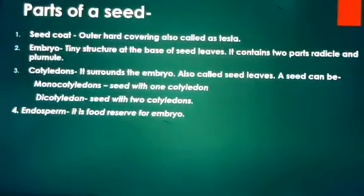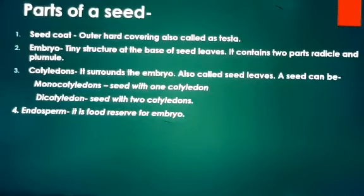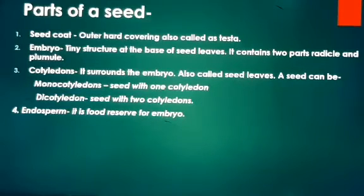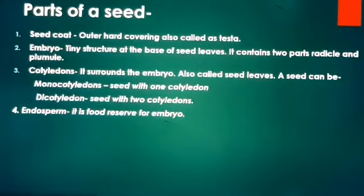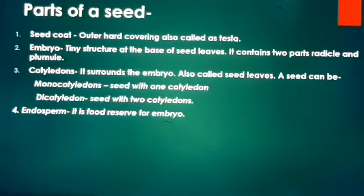The next topic is parts of a seed. Generally, a seed consists of the following parts: first is the seed coat, which is the outermost part of the seed; then the embryo, which means the future plant; third is the cotyledon; and the last one is the endosperm.